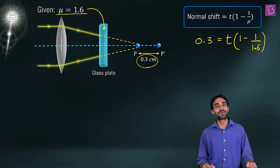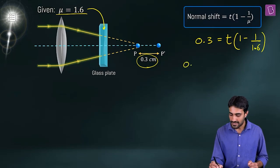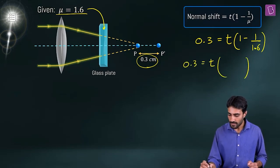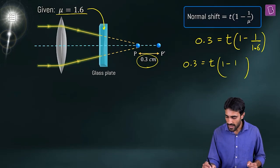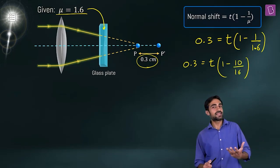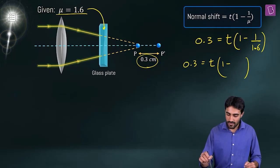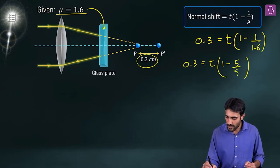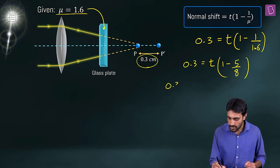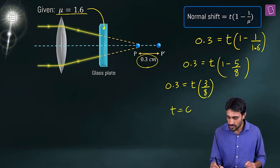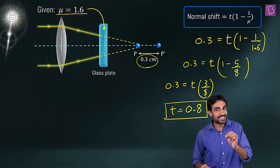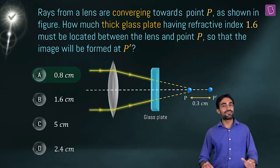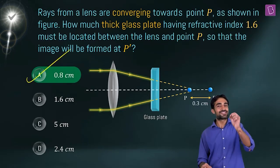From 0.3 = T × (3/8), we get T = 0.3 × (8/3) = 0.8 cm. This is the thickness of our glass plate. Looking at the options, option A is the right answer for our question.